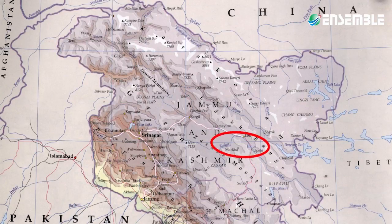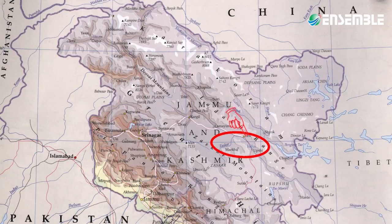Located on the Indus, the Zanskar Confluence makes Leh the northernmost confluence city. Leh is indeed a confluence city like Allahabad. By perception, people may think the northernmost confluence city is Allahabad, but civil service aspirants should know the reality: the northernmost confluence town is Leh.